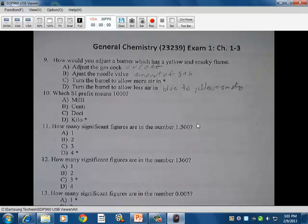Then D, turning the barrel to less air in, turns it from, if you had the appropriate amount, that would turn it from the blue flame to a yellow and smoky flame. So you want C to make it the correct kind of flame from yellow and smoky to blue. Prefixes for number 10, 4000 is kilo. Significant figures for 1.500 would be 4, because the zeros don't need to be there. So they're there for a reason. So they're significant.